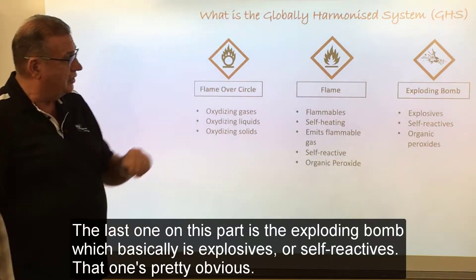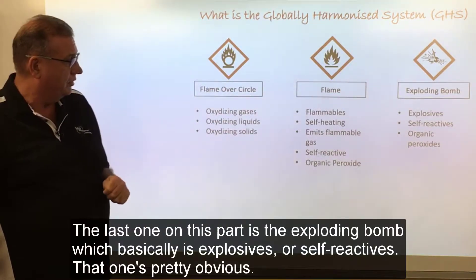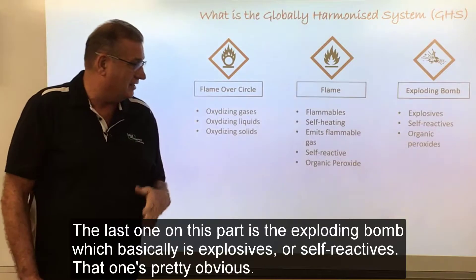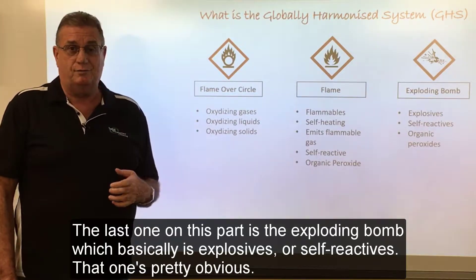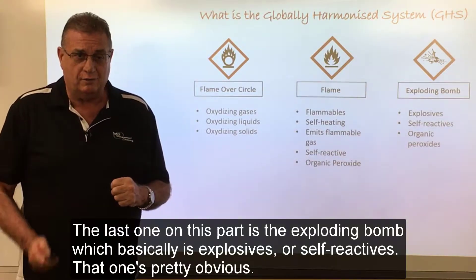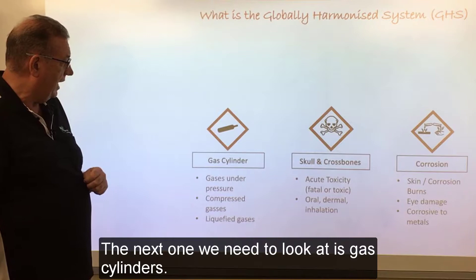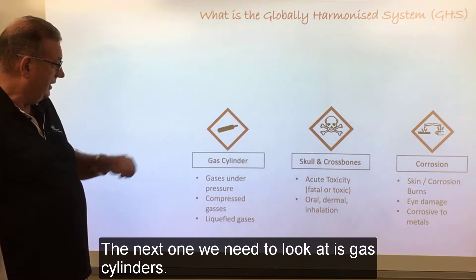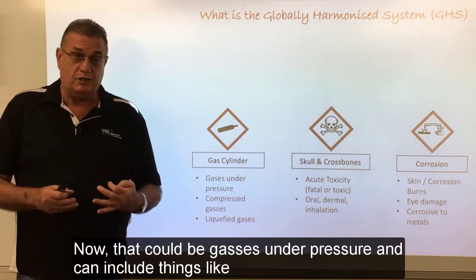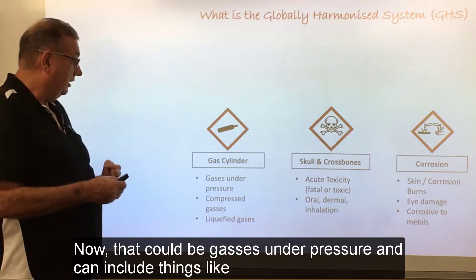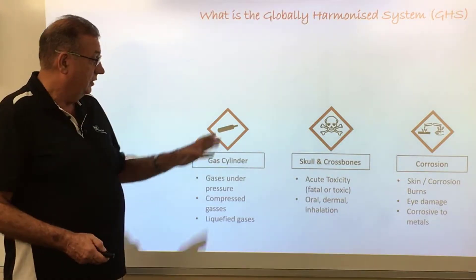The next pictogram is the exploding bomb, which basically covers explosive and self-reactive substances — pretty obvious from the exploding bomb symbol. Next we have gas cylinders, which covers gases under pressure, including things like compressed gases and liquefied gases.